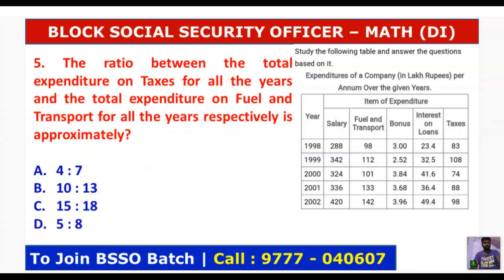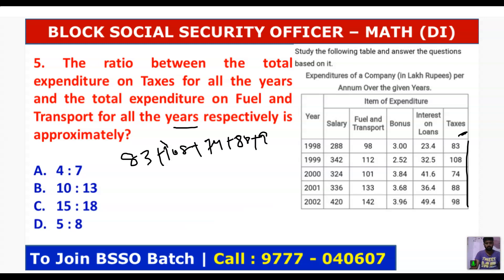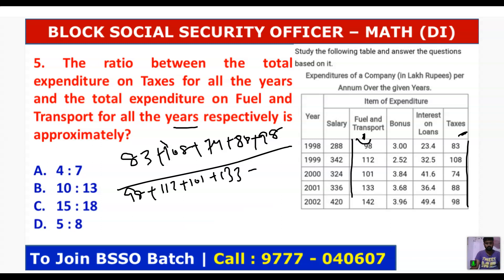Next last question: the ratio between the total expenditure on taxes for all the years to the total expenditure on fuel and transport for all the years respectively is approximately. Taxes: 83 plus 108 plus 74 plus 88 plus 98, divided by fuel: 98 plus 112 plus 101 plus 133 plus 142. That gives 451 divided by 586.